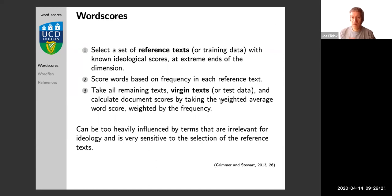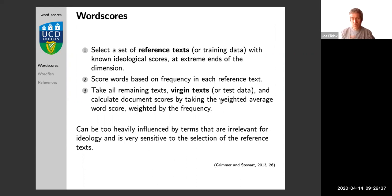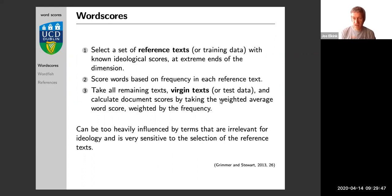We might know of a very right-wing text and a very left-wing text, and we can look at to what extent the words used in those texts are unique to either the left-wing or the right-wing document, or more shared. Then we can score all the other texts. They always talk about two reference texts and a number of virgin texts — in machine learning we would really talk about training data and test data, but the idea is the same.